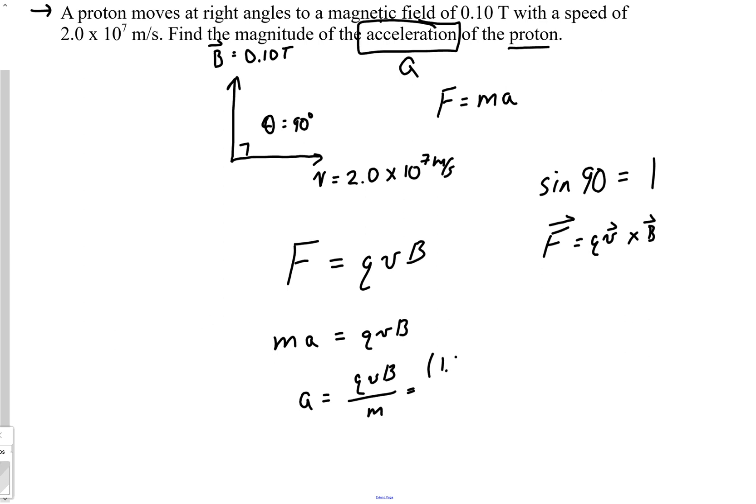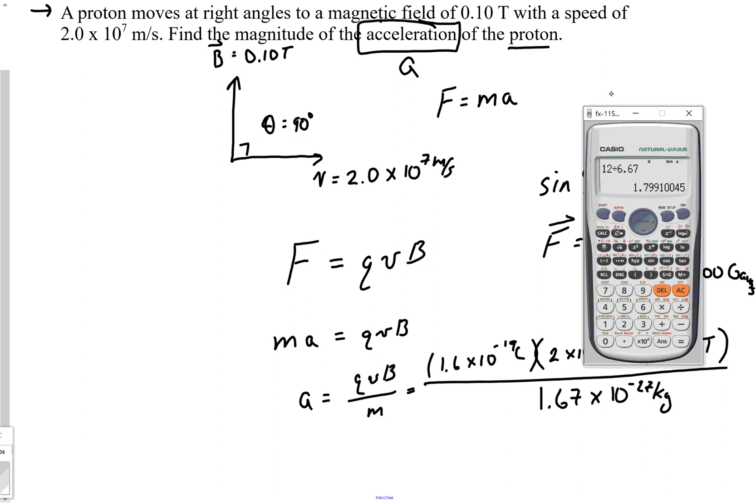You would have to know the charge of an electron. Well, you should have that memorized by now. 1.6 times 10 to the negative 19 Coulomb. So, let's see. Velocity, it said, was 2 times 10 to the 7 meters per second. And it told us the magnetic field, 0.10 Tesla. If it tried giving you Gauss, just remember that 1 Tesla is equal to 10,000 Gauss. So, if they tried to trick you up with that unit, just make sure you do a conversion before you do this. It's divided by the mass of a proton, which you really should also have memorized at some point. 1.67 times 10 to the negative 27 kilograms. And so, all we have to do is plug that in.